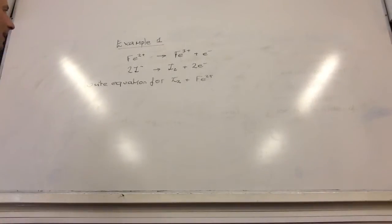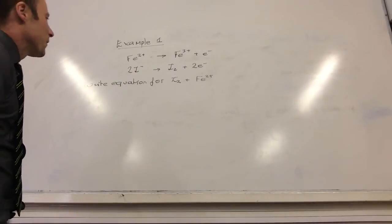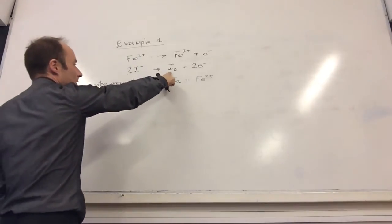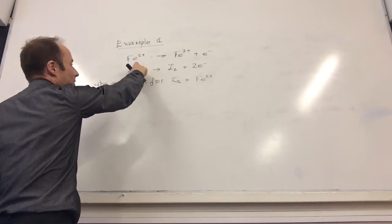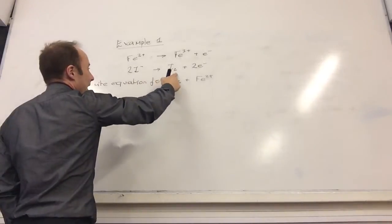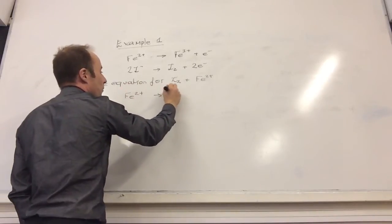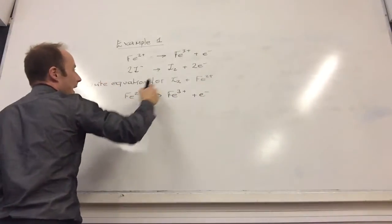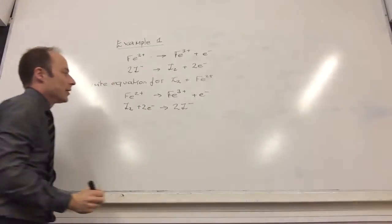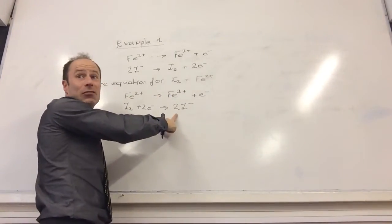Example number one: here are two half equations we've done previously, and it wants me to write the equation for I2 with Fe2+. So I need to start with I2 plus Fe2+. I'm going to rewrite these — Fe2+ is still my reactant, so that stays. However, I2 plus two electrons goes to I minus, because this one is being oxidized, so the iodine one has to be reduced.